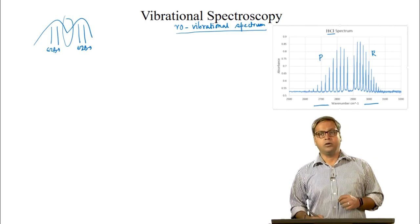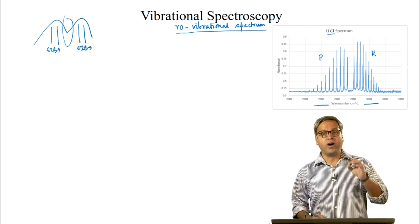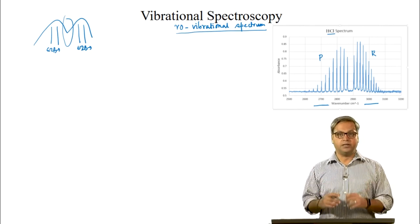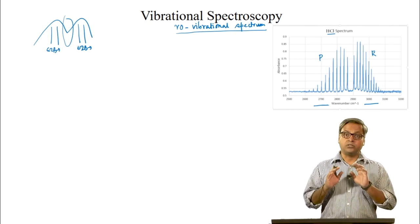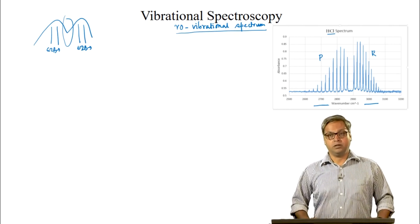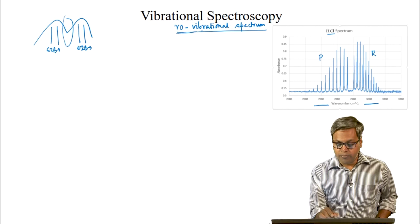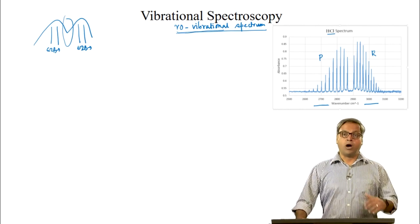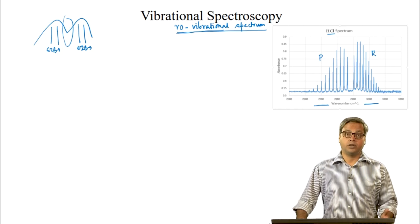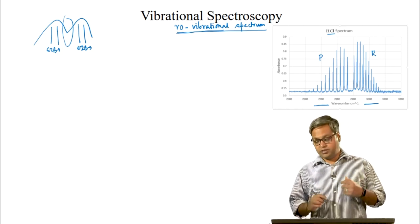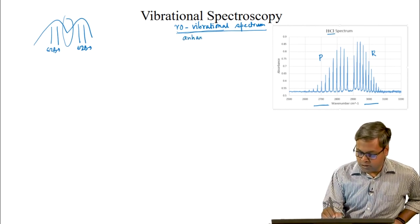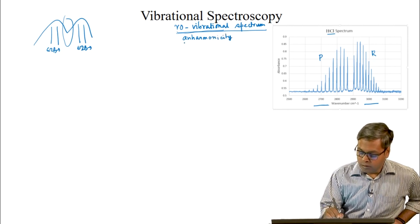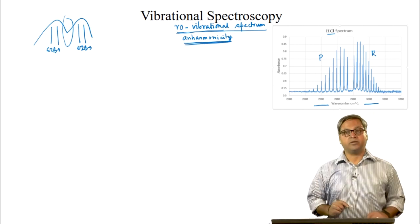So we need to find out why the rotational fine structure is becoming crowded as we go to higher and higher frequencies. This does not agree with our previous discussion on the ro-vibrational spectrum. The reason behind this is anharmonicity — anharmonicity is responsible for these features in the spectral lines.